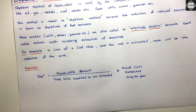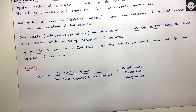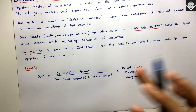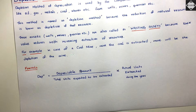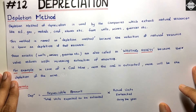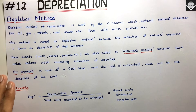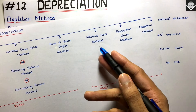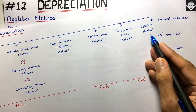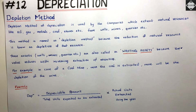As we go on extracting natural resources, the value of those wells, mines, or quarries gets reduced — it gets depleted — and that's how we charge depreciation. You can think of it as: take the depreciable amount, multiply by the ratio of units extracted to total units available. The calculation is the same as machine hour and production units methods — only the basis differs: here it's units extracted rather than produced.